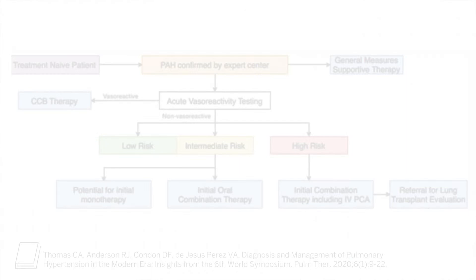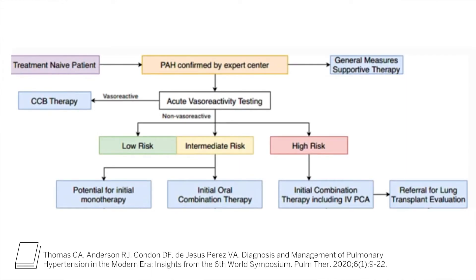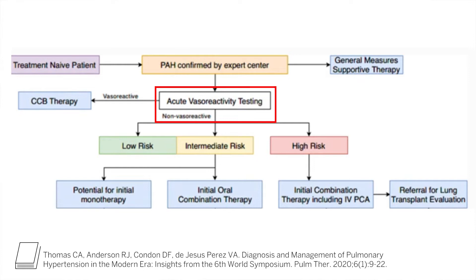Even though we perform this testing in individuals undergoing right heart catheterization, only 10% of patients meet the criteria for being vasoreactive. As shown in this figure, if they were vasoreactive, they would then be potential candidates for calcium channel blocker therapy. But if your patient does not show evidence of vasoreactivity, what would be the next steps for potential therapy?